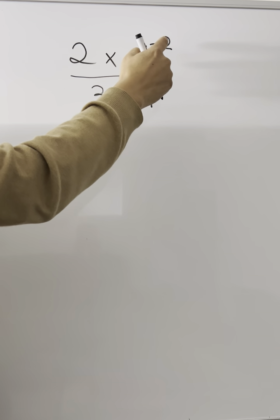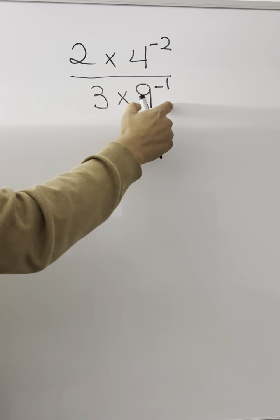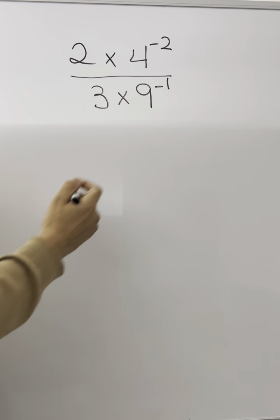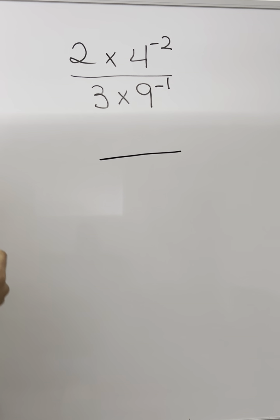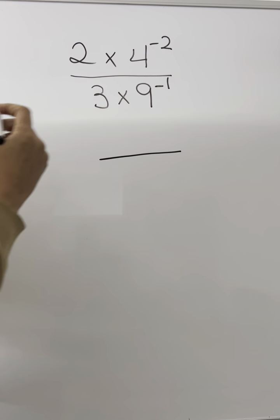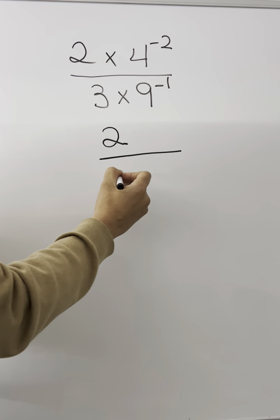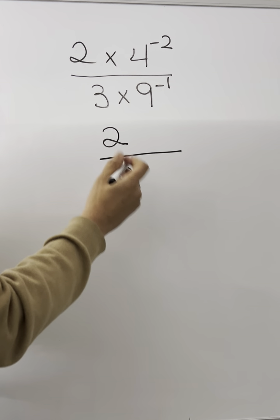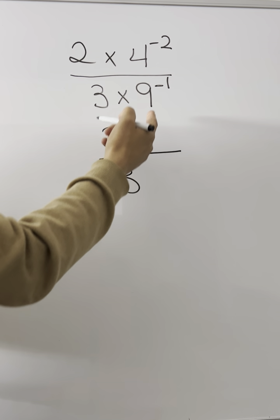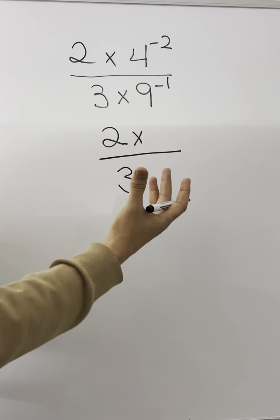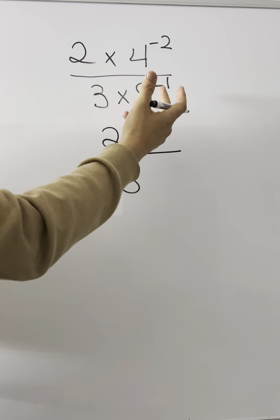2 times 4 to the power of negative 2 over 3 times 9 to the negative 1. A very quick thing you could do is keep the 2 where it is and keep the 3 where it is, because they don't have negative exponents. If a number has a negative exponent and it's on the bottom, you bring it to the top and that will change the exponent to positive.